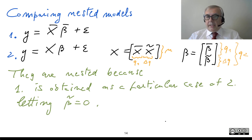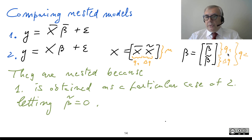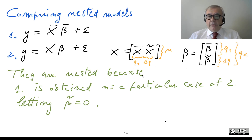Accordingly, beta can be decomposed into two pieces: beta-bar of dimension Q1, and beta-tilde of dimension delta-Q. Altogether we have Q2 equals Q1 plus delta-Q. These models are nested because you can obtain model 1 as a particular case of model 2 by setting beta-tilde equal to zero.